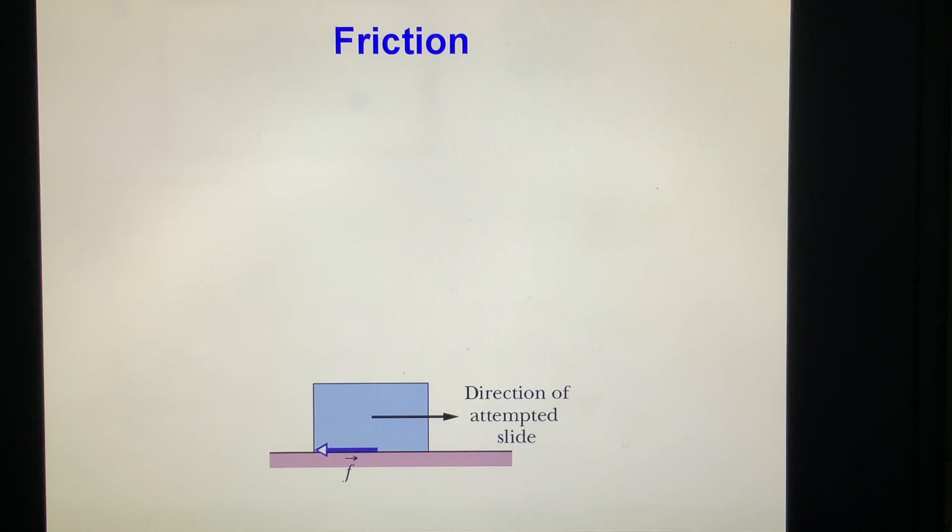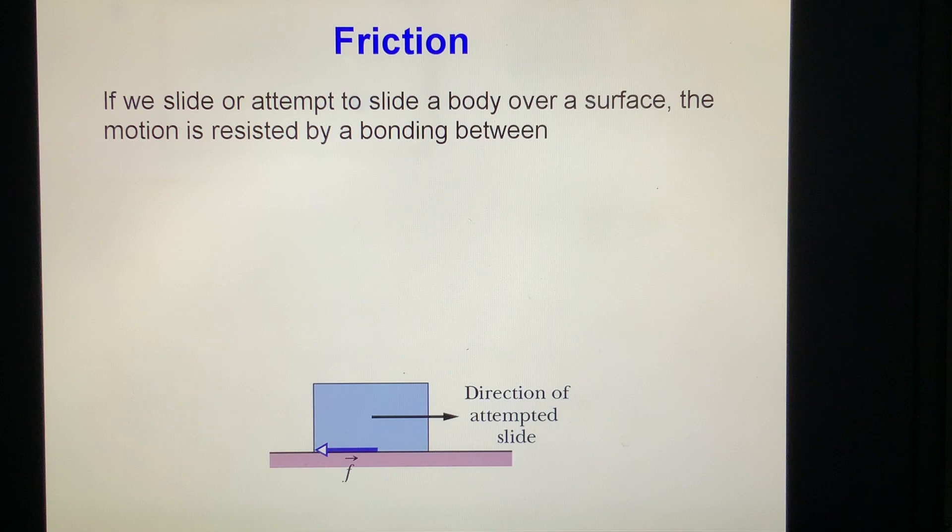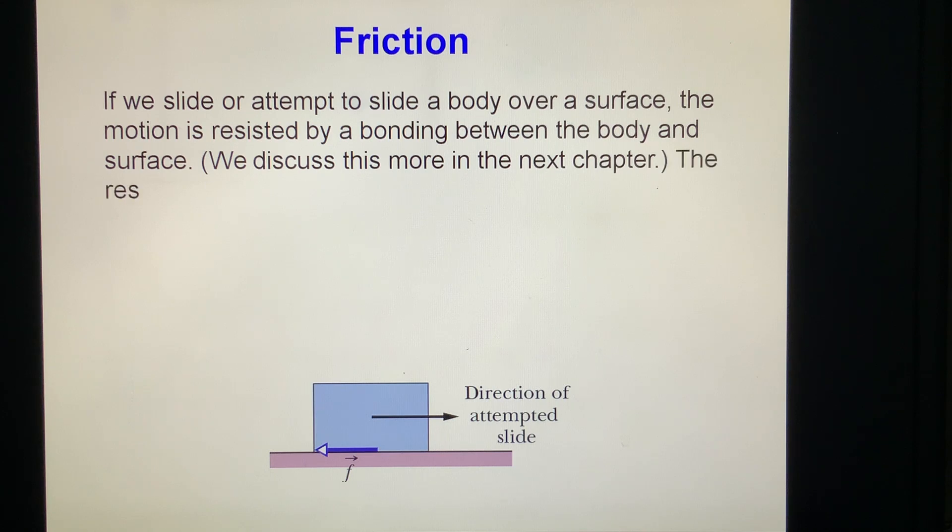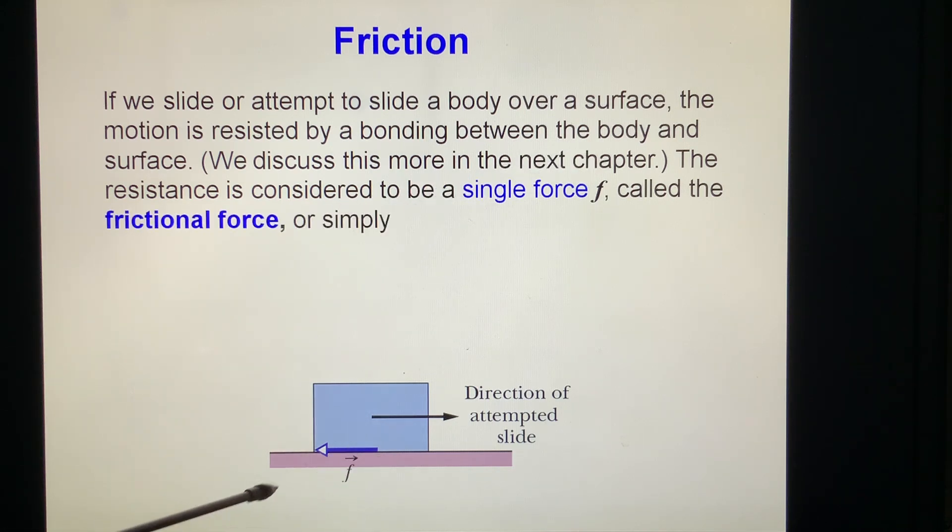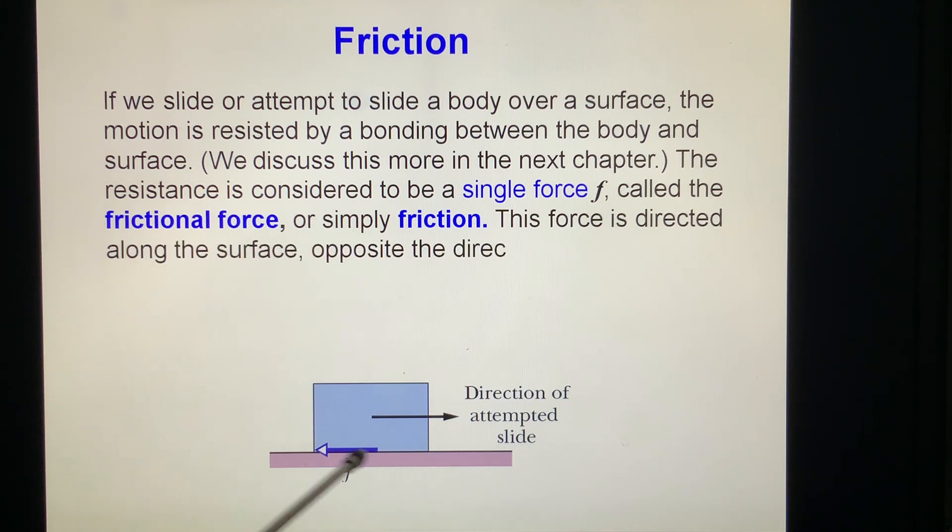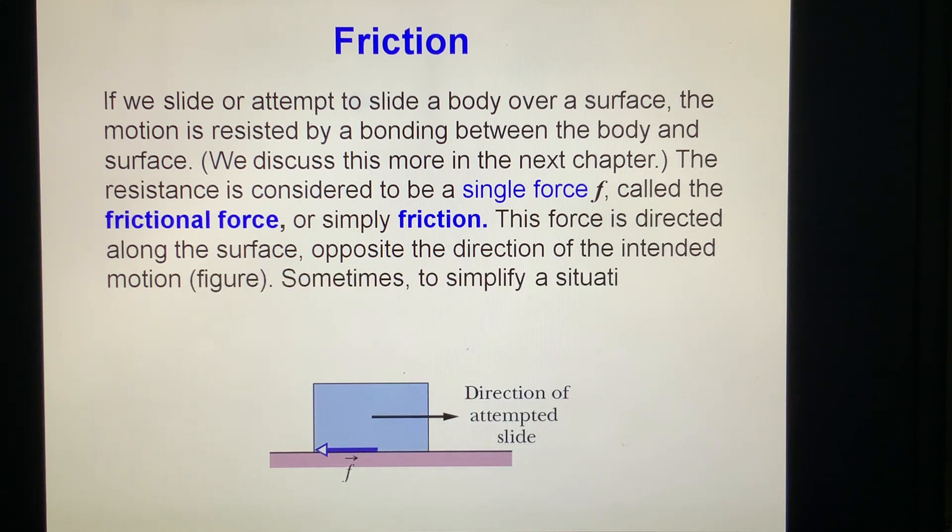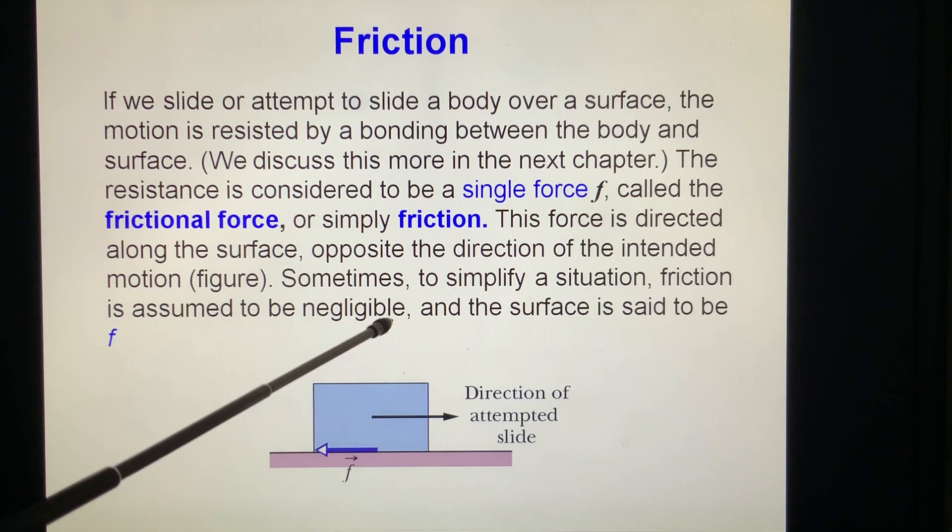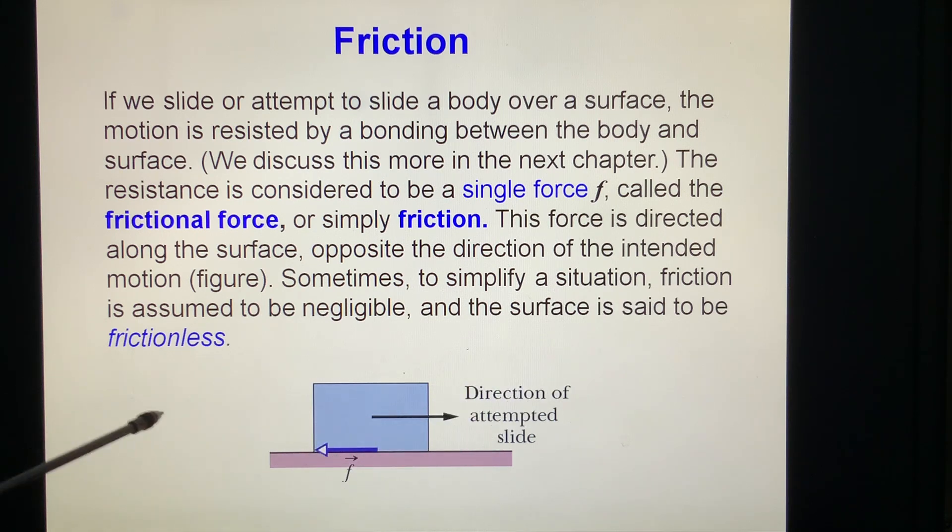Friction. If we slide or attempt to slide a body over a surface, the motion is resisted by bonding between the body and the surface. We discuss this more in the next chapter. The resistance is considered to be a single force F, called frictional force, or simply friction. This force is directed along the surface, opposite the direction of the intended motion. Sometimes, to simplify the situation, friction is assumed to be negligible, and the surface is said to be frictionless, no friction.